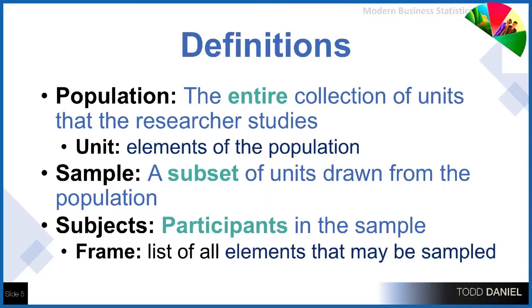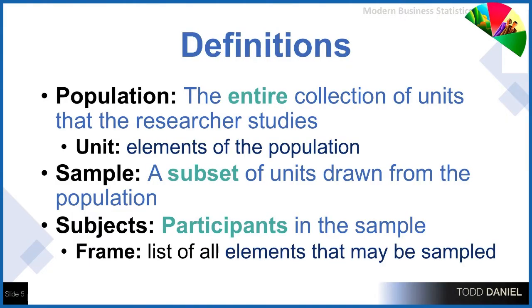It's important that we have our definitions straight. A population is the entire collection of units that the researcher studies. By unit, I mean an element of the population — it could be people, historical cases, ficus trees, or dogs, depending on the research. The sample is a subset of units drawn from that population. If participants are human beings, we call them participants rather than subjects. A frame is a list of all of the elements that may be sampled within our population.